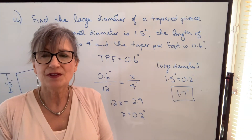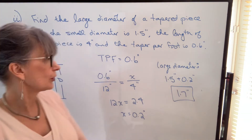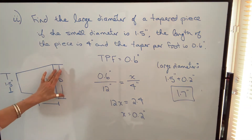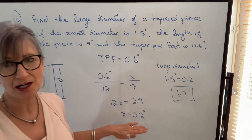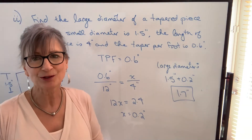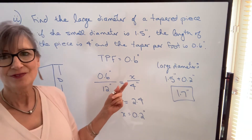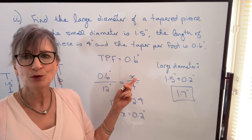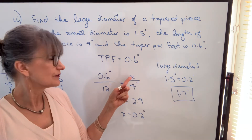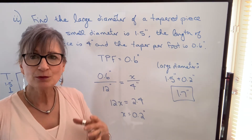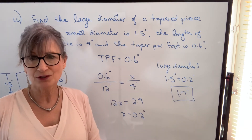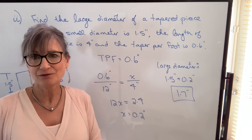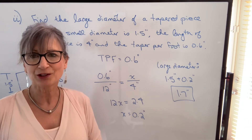We could do the same thing if we knew the large diameter and wanted to find the small diameter — except then we would subtract the amount of taper. So we use proportion to find the amount of taper. Once we know the amount of taper and one of the diameters, we can easily find the other diameter.